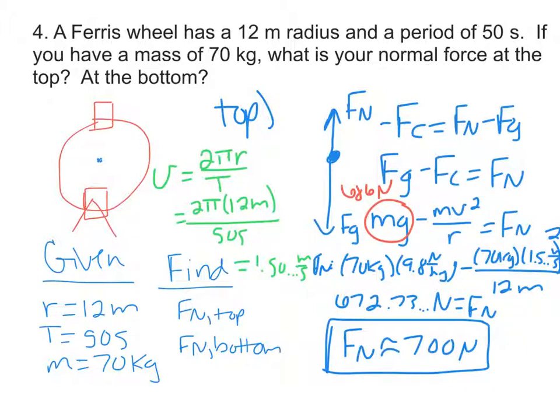So rounded 700 newtons, but what we really care about right now is that this number is less than 686. So this is the top of the Ferris wheel, now let's look at the bottom.